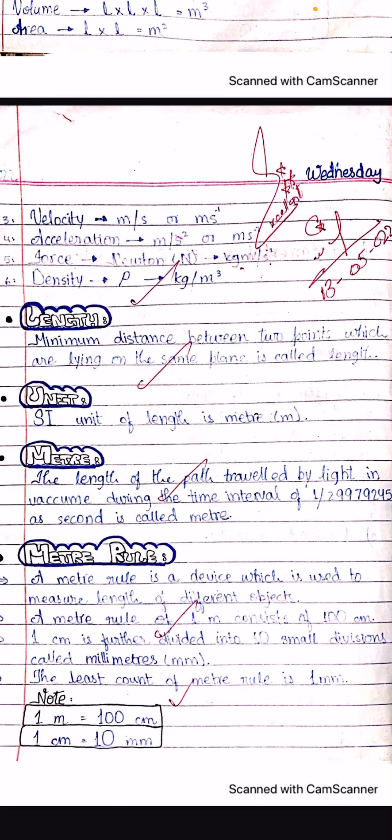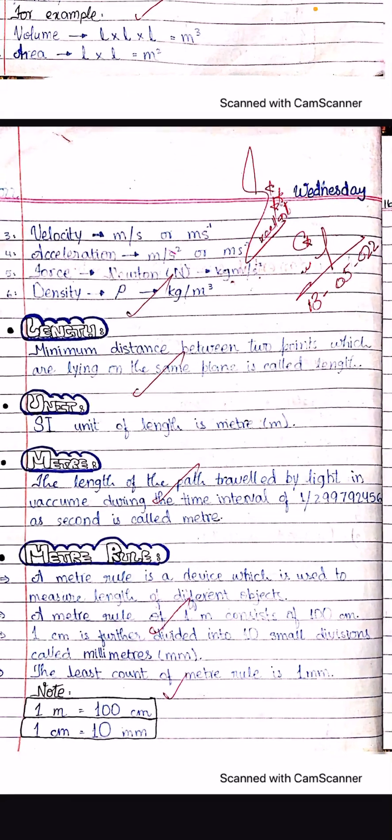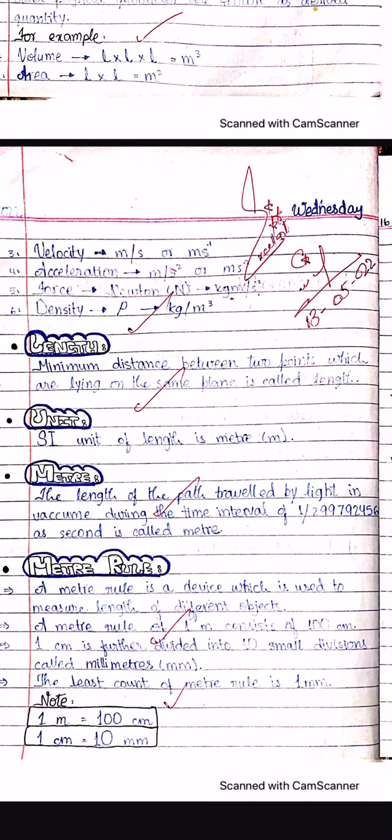A meter rule of one meter consists of one hundred centimeters. This is the meter rule we use in the physics lab and science lab.